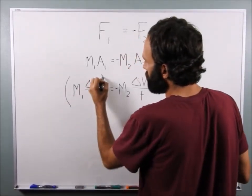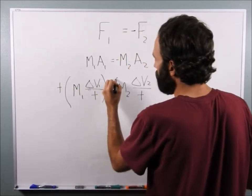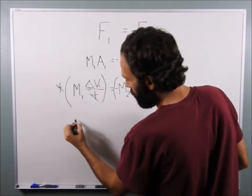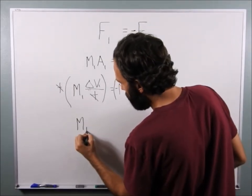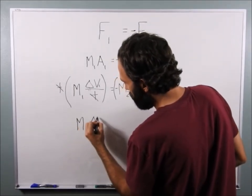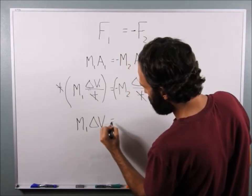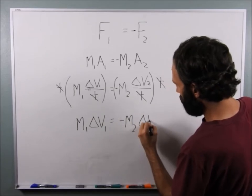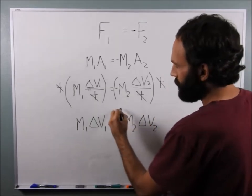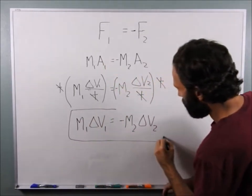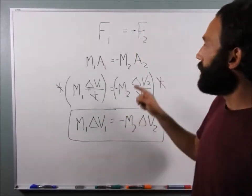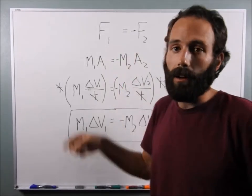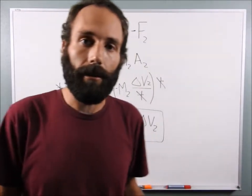So, multiply each side by T, since it's the same, it's constant. T cancels, and you get M1 times delta V1 equals negative M2 times delta V2. This is the conservation of momentum equation. It is action and reaction. It is Newton's third law. It's the same thing. It's just a different way to write it.